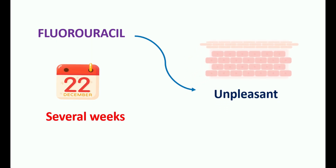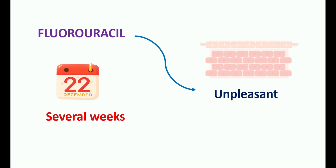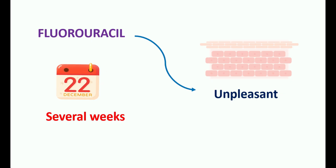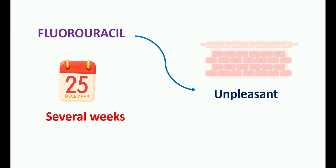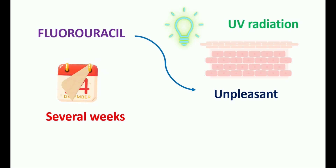When you apply 5-fluorouracil cream topically on the skin, at the applied area it can produce some unpleasant appearance which may be present for several weeks even after stopping the therapy. This is normal with any topical anti-cancer agent. Since this medication can produce a local reaction at the applied area, you may observe an unpleasant skin structure; however, this may resolve after several weeks of treatment.